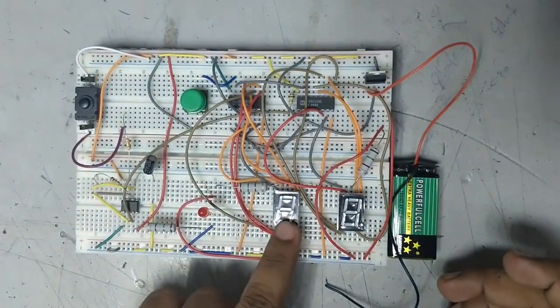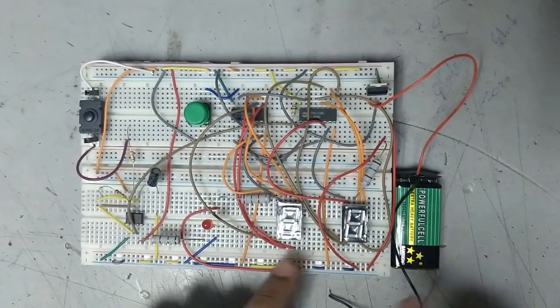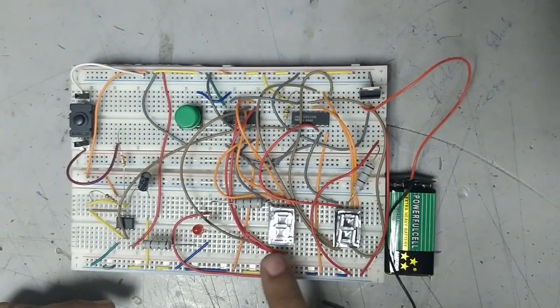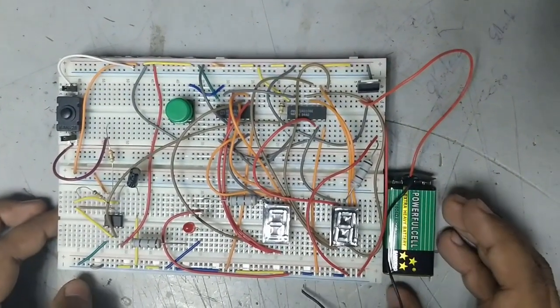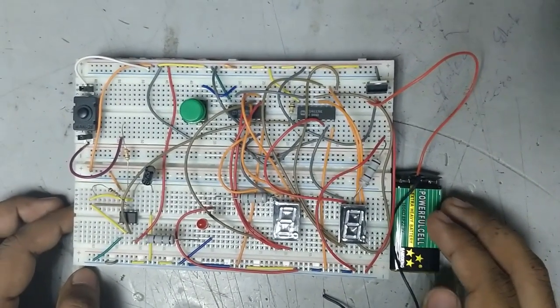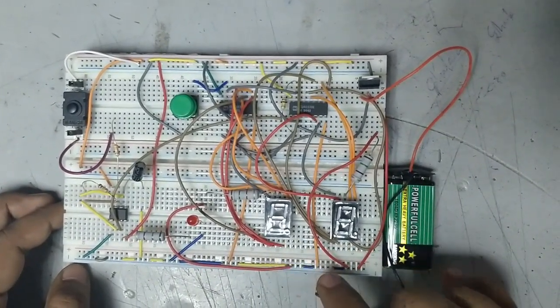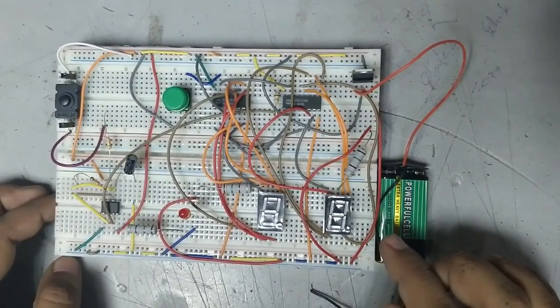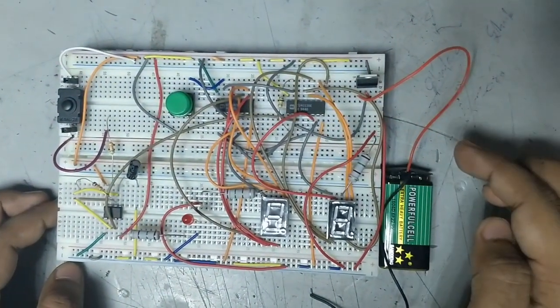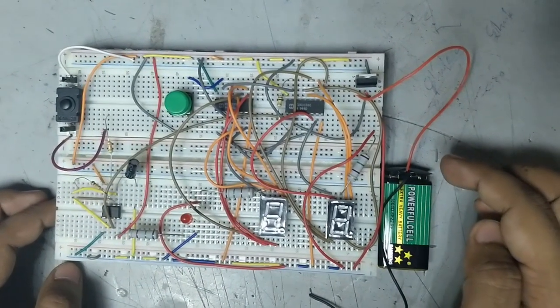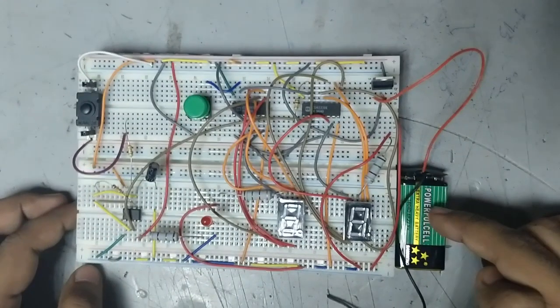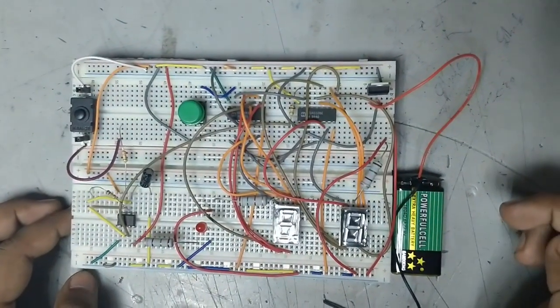Now these are the two seven segment displays for two decimal numbers. There are two seven segments, so the stopwatch circuit can count 00 to 99. This is the voltage regulator 7805 IC. It regulates the voltage. We provide nine volts and it gives us five volt output.